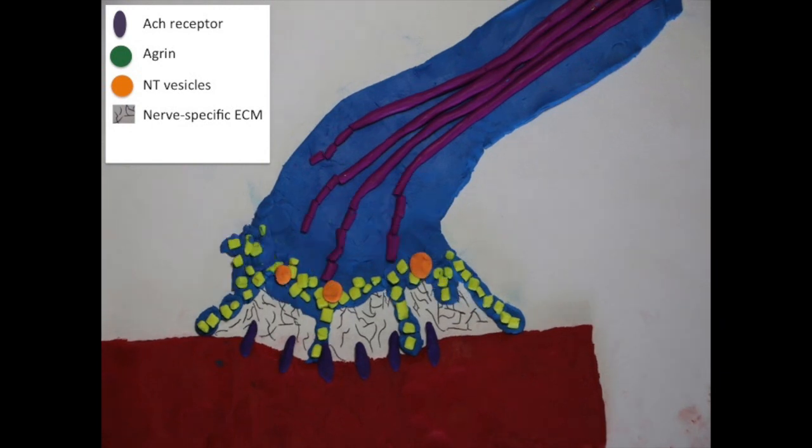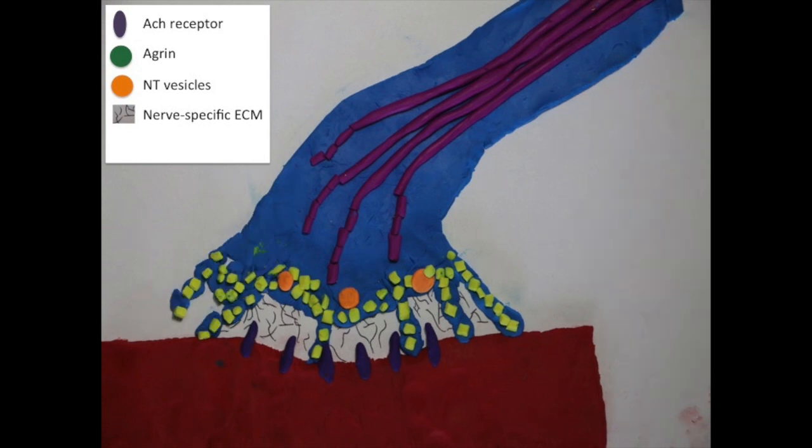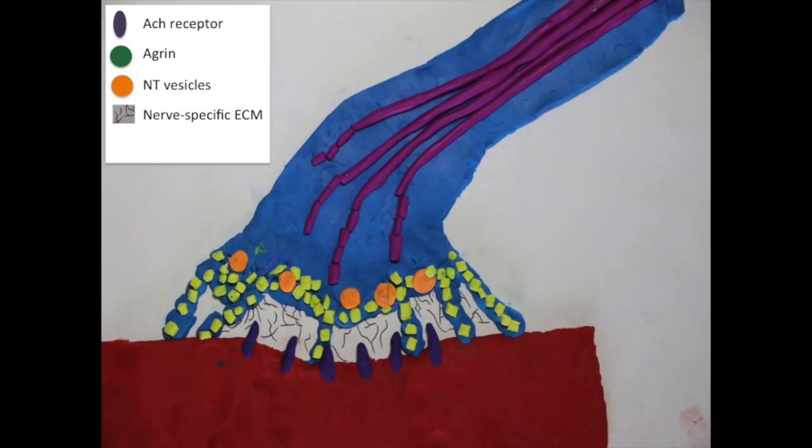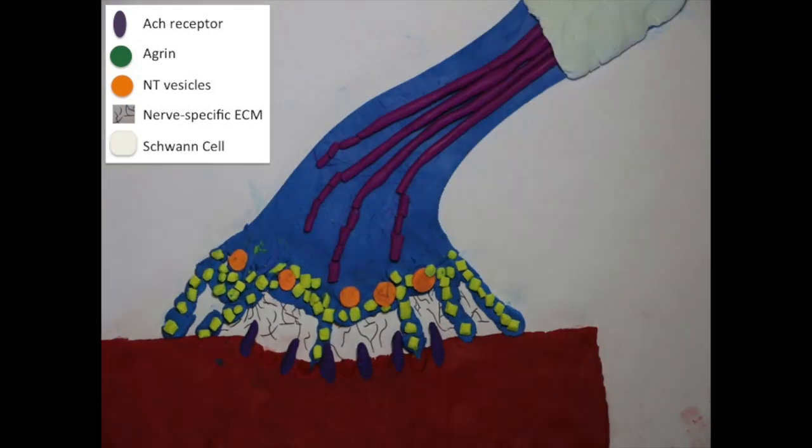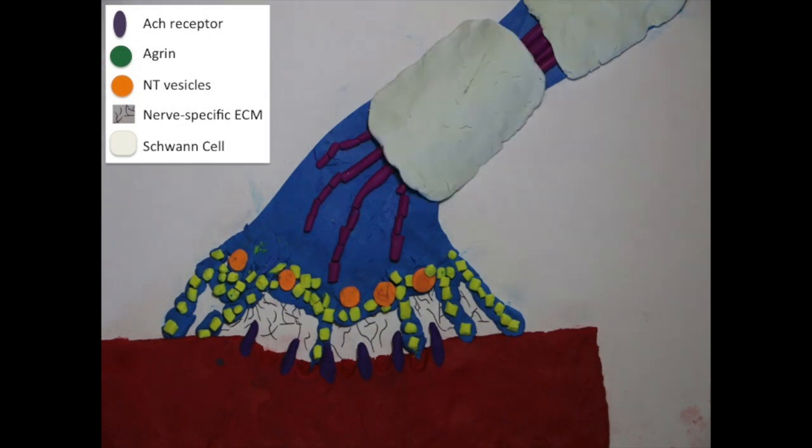A survival factor called neurotrophin is key to determining which axon remains at the synapse. The surviving axon continues to branch and is ultimately sheathed by a Schwann cell, shown in white, to complete formation of a stable neuromuscular junction.